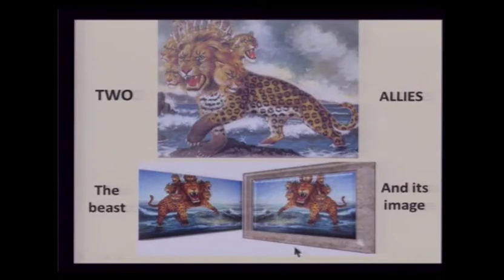Tonight we're going to have a look at two beasts — it's called 'Two Allies and the Beast and Its Image' — and these beasts we find in Revelation chapter 13. Revelation chapter 13 is the heart of the book of Revelation. The book of Revelation is written as a chiasm, a particular structure, where the first half is a historic half and the last portion is the eschatological portion pertaining to future events, eventually culminating in the new earth.